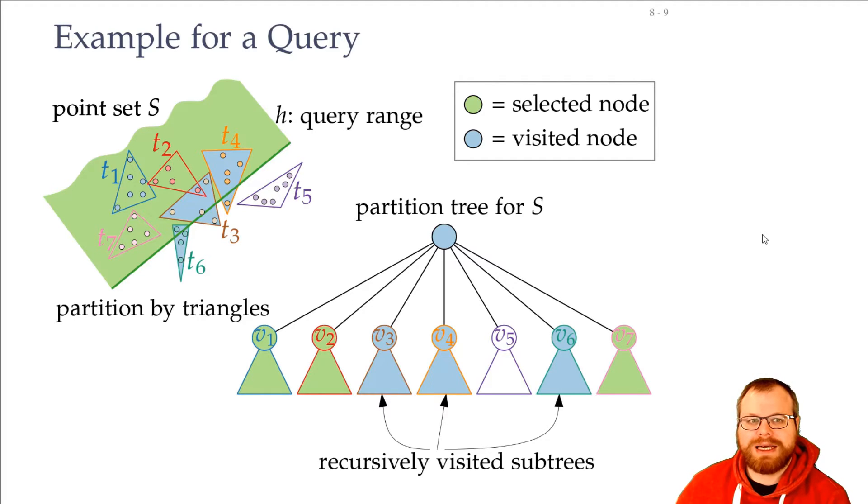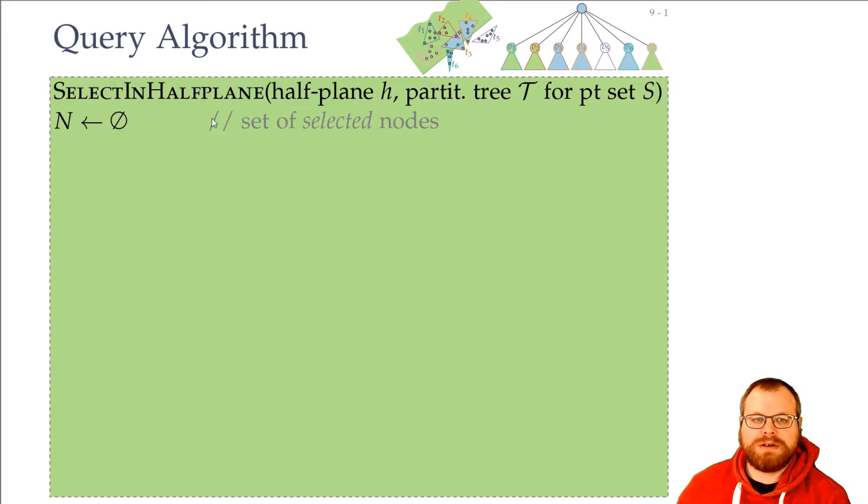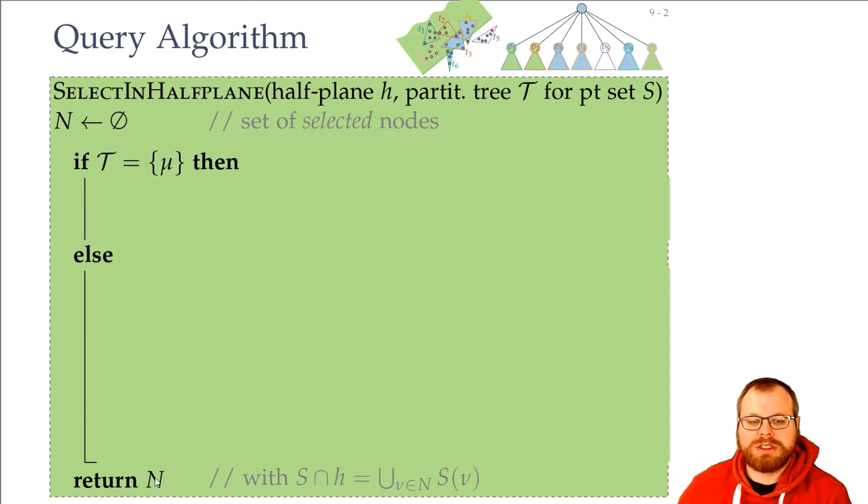So we get the following algorithm. We have a recursive algorithm SelectInHalfPlane, where we have this half-plane h, the partition tree T, and the points at S. In N we want to store all the selected nodes in every step of the recursion, and that's also what we want to return in the end. We want to return these canonical subsets N, such that the intersection of the half-plane with the point set is exactly the union of the points in these selected nodes.